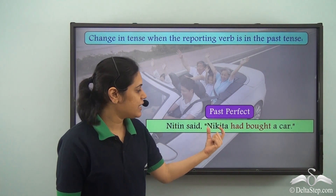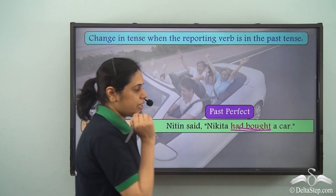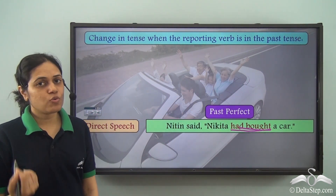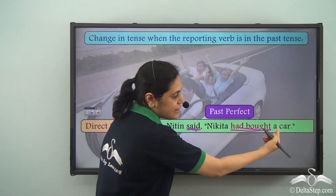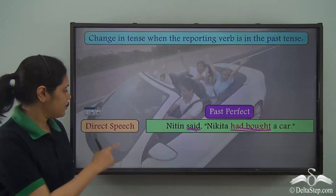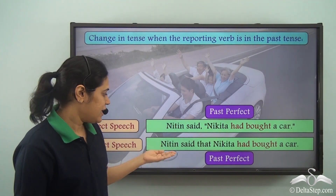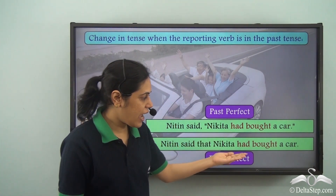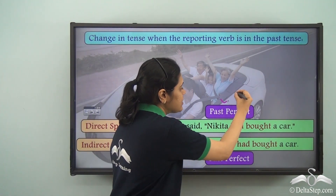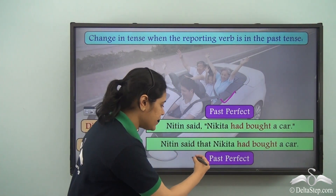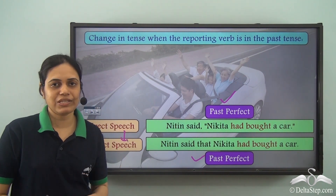Nitin said Nikita had bought a car. 'Had bought' is past perfect. So what will it change to in indirect speech? Well, in indirect speech it remains as past perfect: Nitin said that Nikita had bought a car. So when the sentence inside the inverted commas is in past perfect tense, the tense does not change from direct to indirect speech — it remains the same.